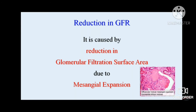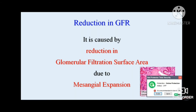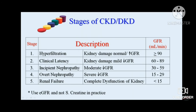To maintain GFR, once the mesangial expansion is so marked that GFR cannot be maintained by the mechanism of hypertrophy, there is irreversible decline in GFR. The first stage is the stage of hyperfiltration, where kidney damage is little and GFR rises or is more than 90 ml per minute.